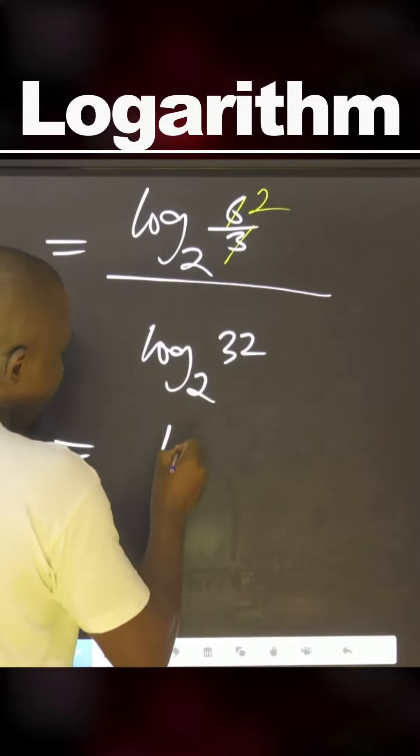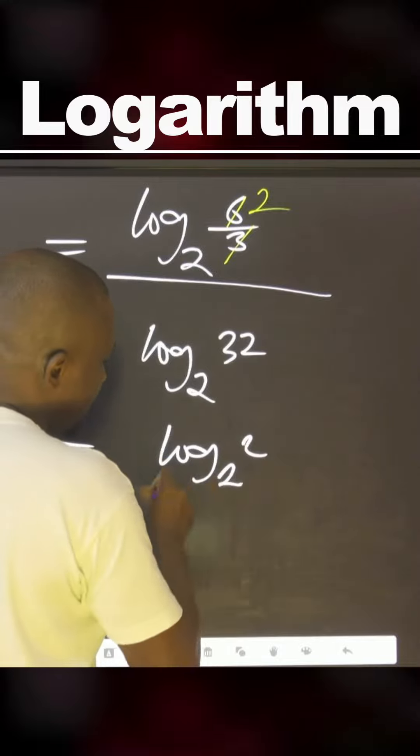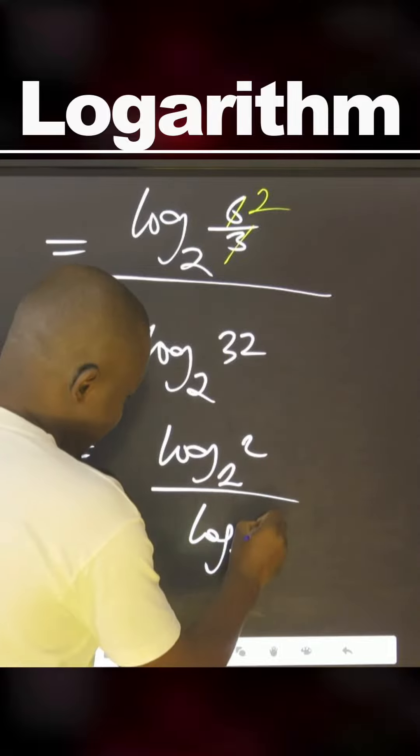So therefore, we can say this one is log base 2 of 32. What is 32? That is two raised to power five. I can remove the five.